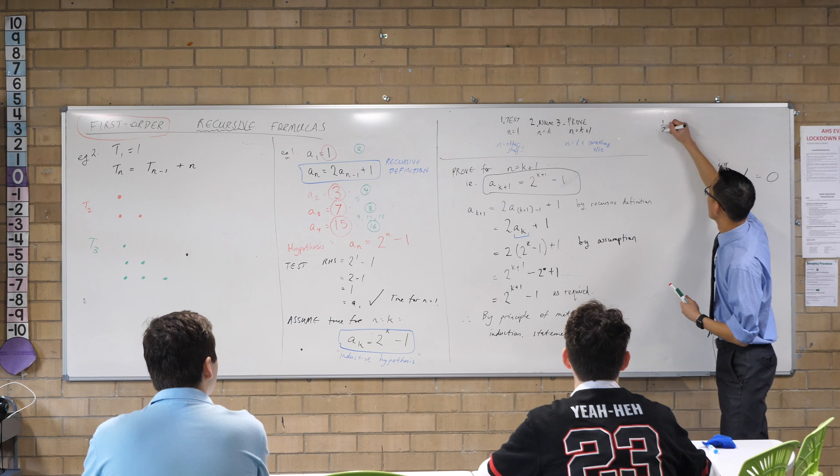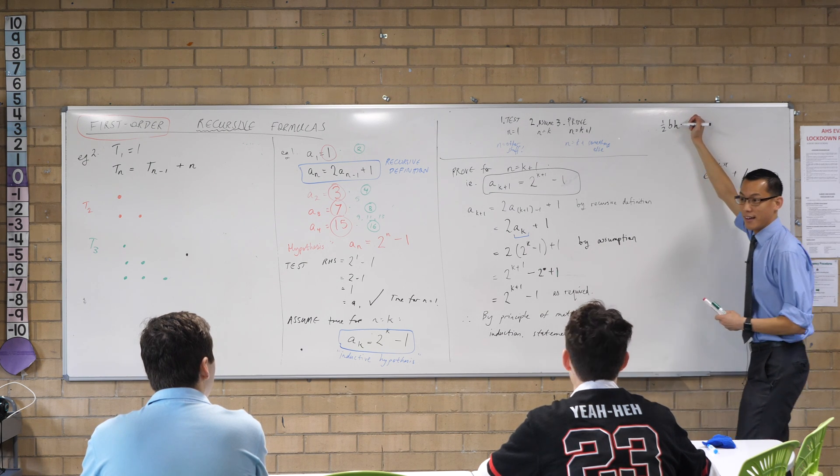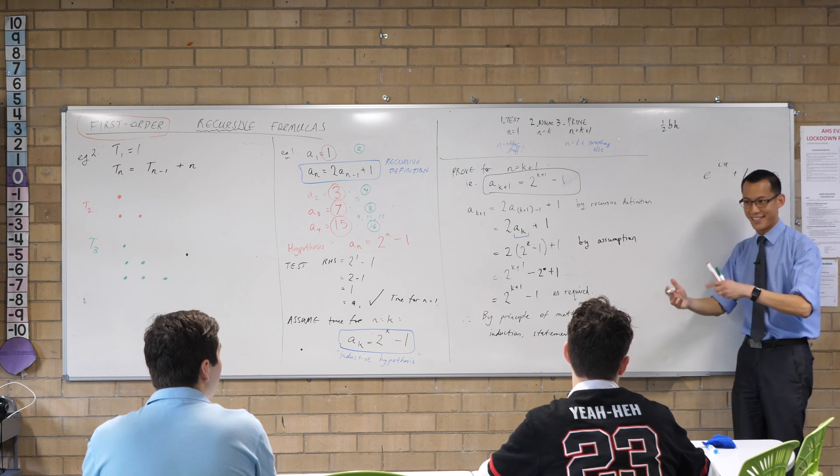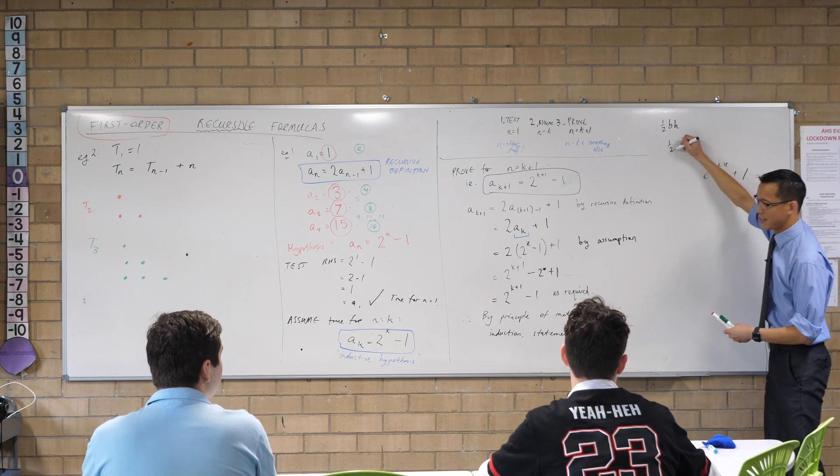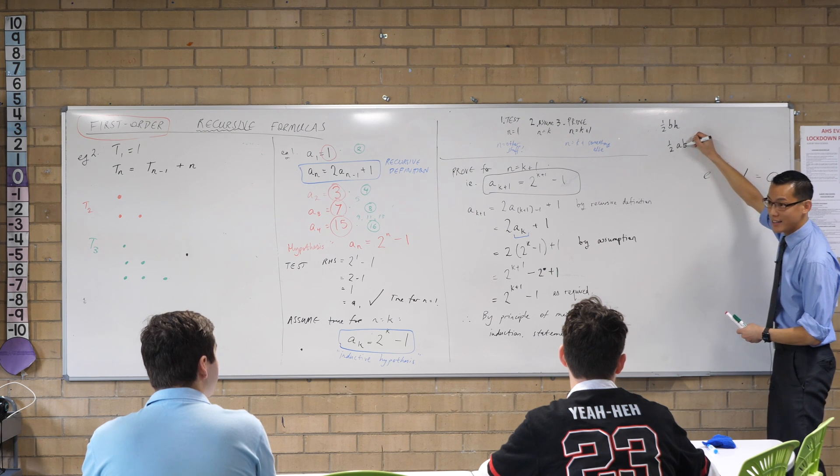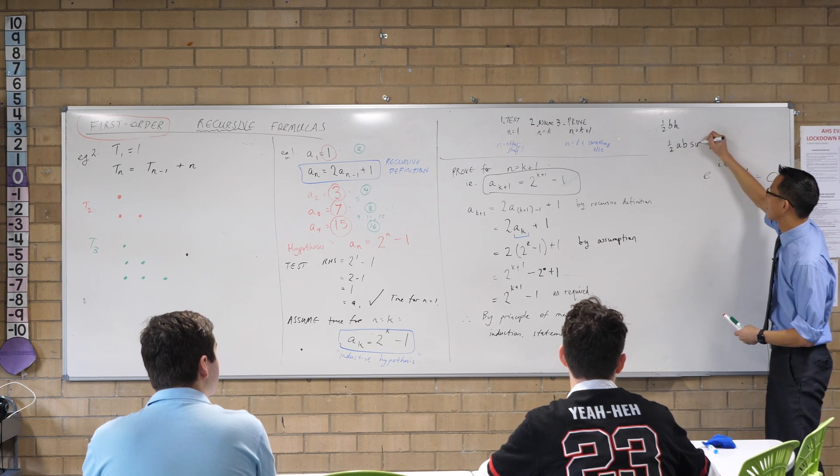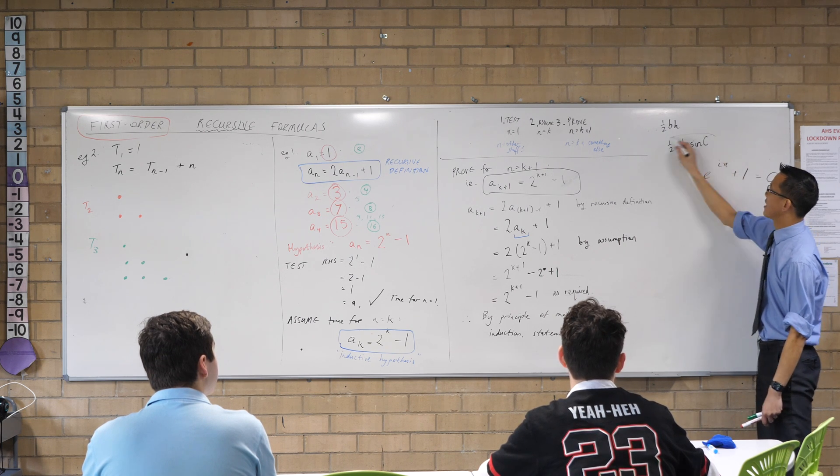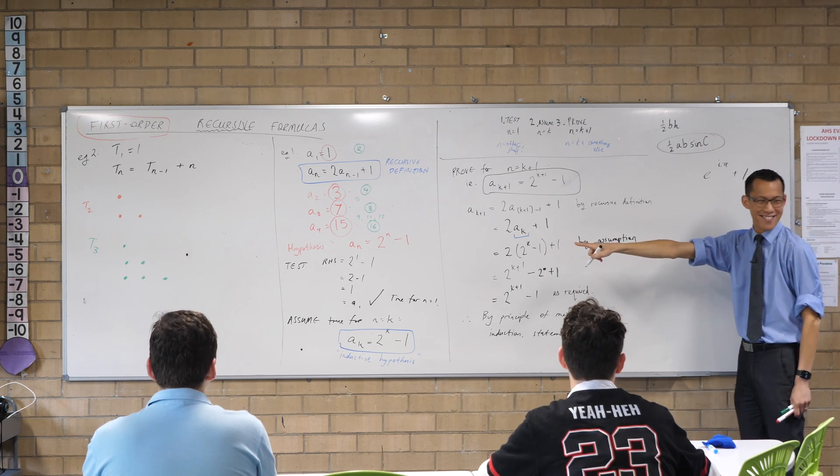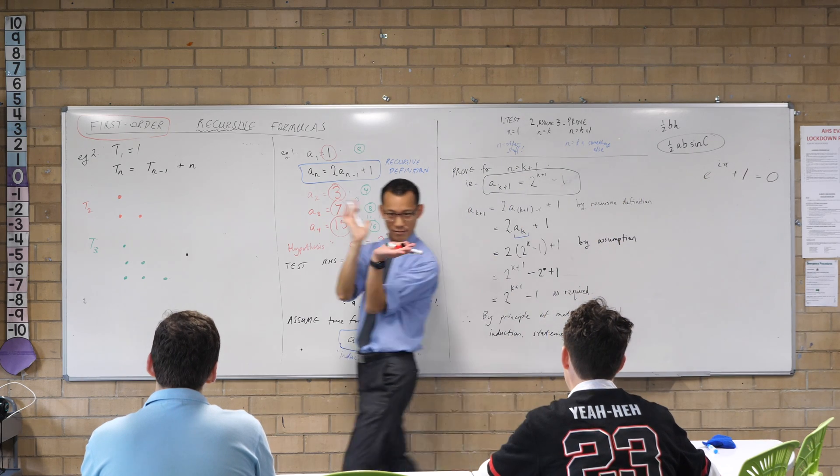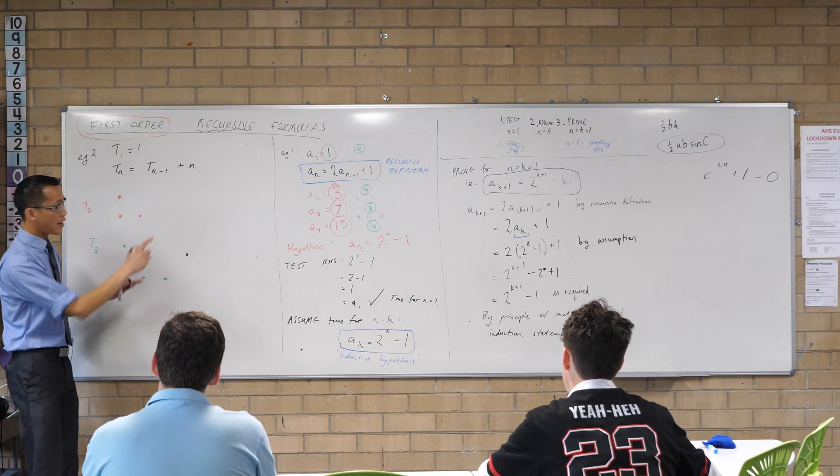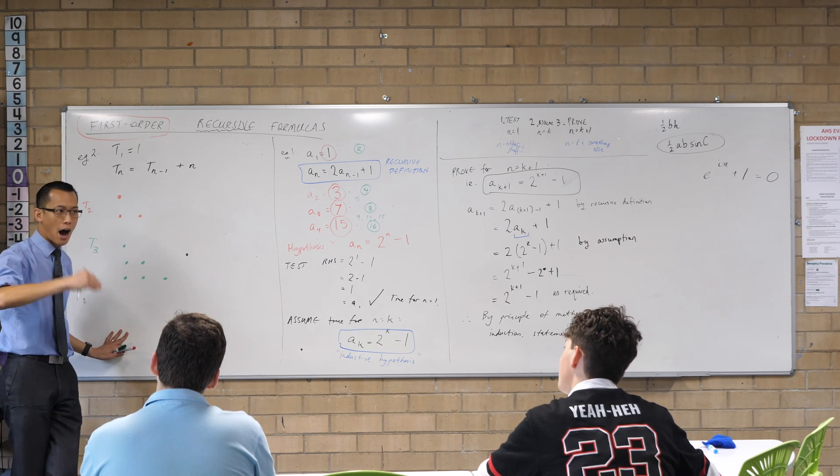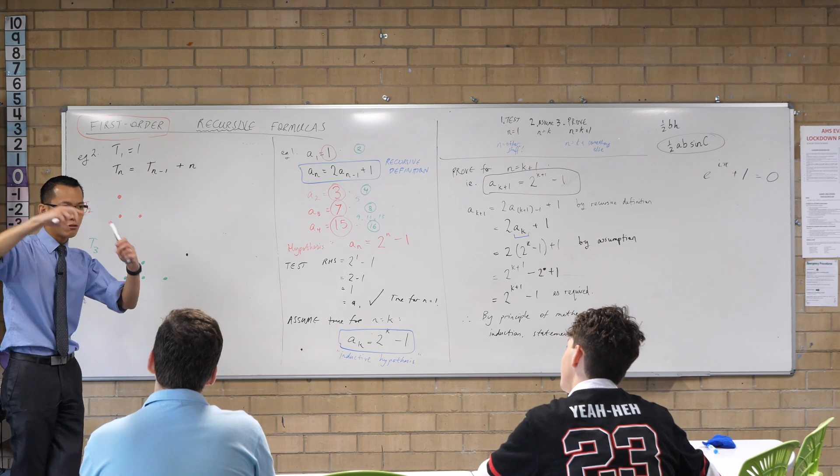Half base times height, this is the one you learned a long time ago. What's the other way? Yeah, it's still half, then you've got to look at the other two sides and relate them in some way if they're not right angled. But that's slightly overpowered for this. The half base height formula comes from the fact that every triangle is half of a rectangle or a square.